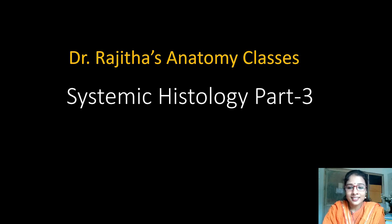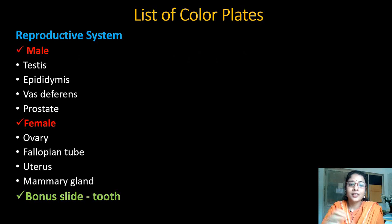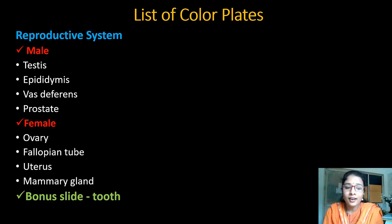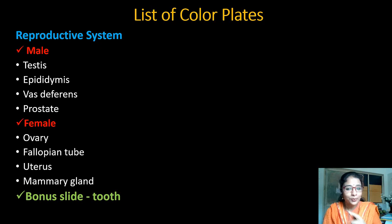Let's see the slides we are going to discuss today. We are going to start with the reproductive system, including both male and female. Male: testis, epididymis, vas deferens, prostate. Female: ovary, fallopian tube, uterus, mammary gland. And a bonus slide today — the tooth, which is very important for dental students.